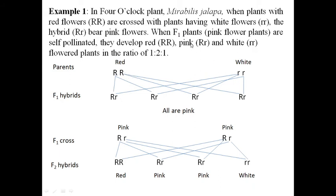When the F1 pink flower plants are self-pollinated, they develop one red, two pink, and one white — a ratio of 1:2:1. This is the characteristic ratio of incomplete dominance. When the F1 hybrid is crossed with itself, we get one red-colored, two pink-colored, and one white-colored flower. This is the example of incomplete dominance in the four o'clock plant, Mirabilis jalapa.